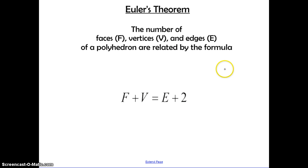Euler's Theorem, the number of faces, vertices, and edges of a polyhedron are related by the formula F plus V equals E plus 2.